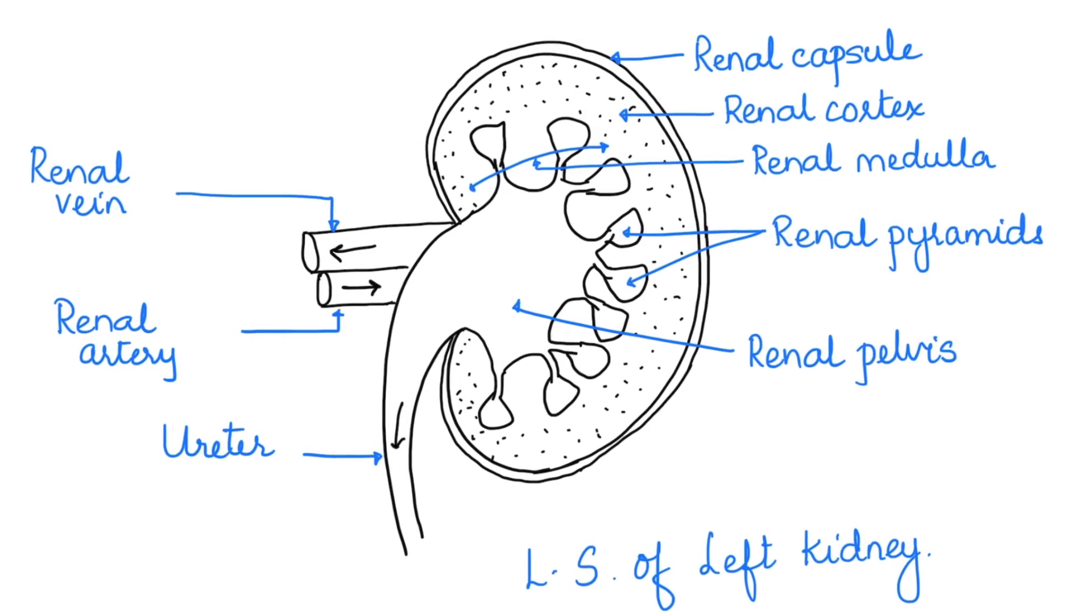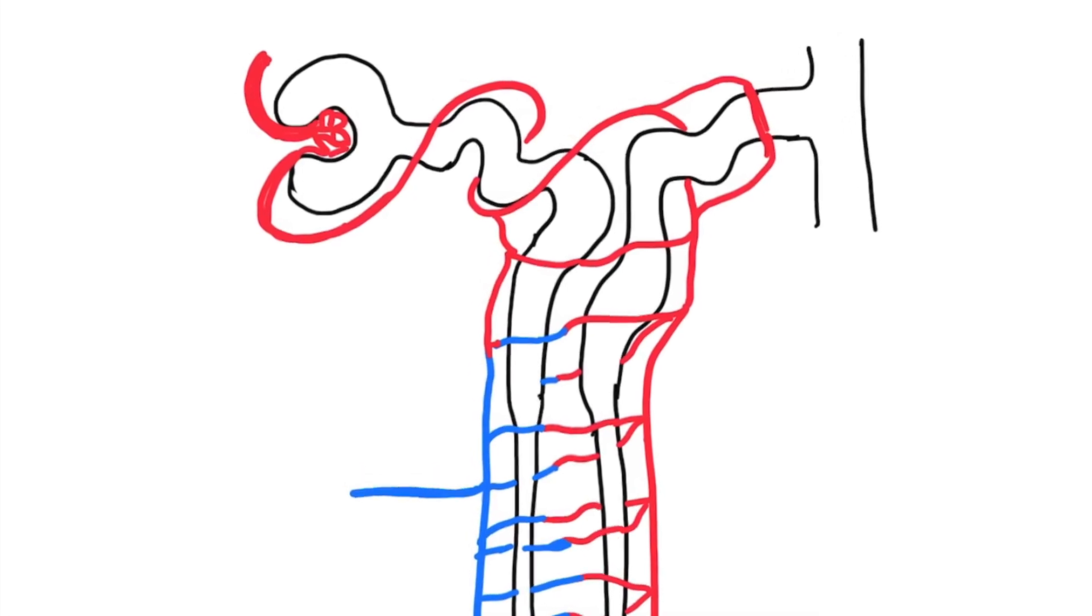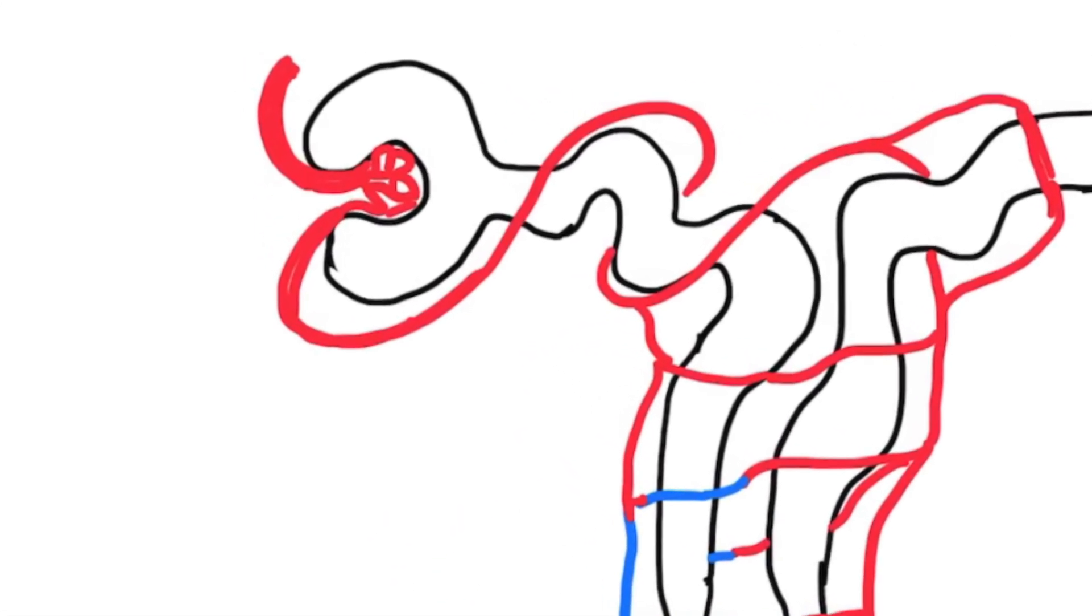We know that the kidney is made up of units called nephrons. The Malpighian corpuscle is a part of the nephron. Let's begin the drawing.